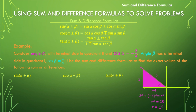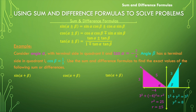Angle beta has a terminal side in quadrant one and cosine of beta is one-third, meaning the x value is one and the hypotenuse is three. Solving for y: one squared plus y squared equals three squared, so y squared equals eight, giving y equals plus or minus two square root of two. Since beta is in quadrant one, y is positive two square root of two.